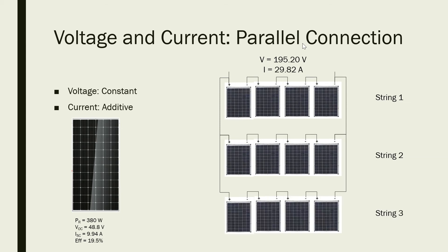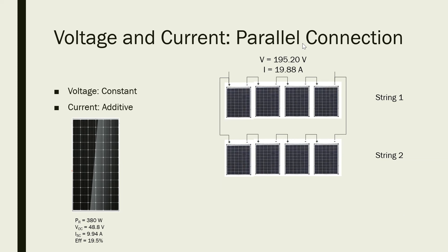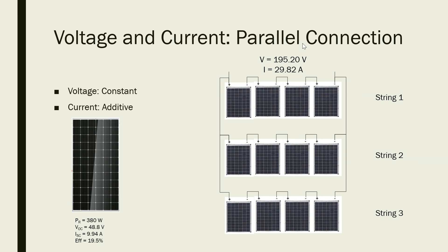Suppose we connect another string to our connection. The voltage doesn't change — it's still 195.20 volts — but our current increased from 19.88 amperes by another 9.94 amps, so the final current is now 29.82 amperes.